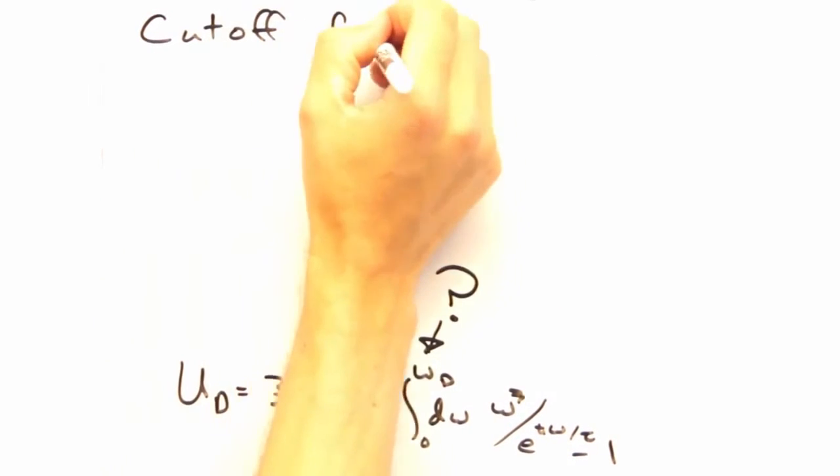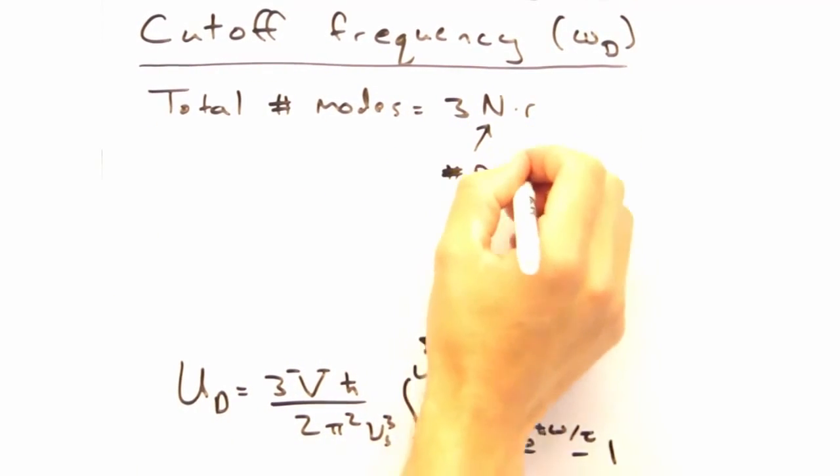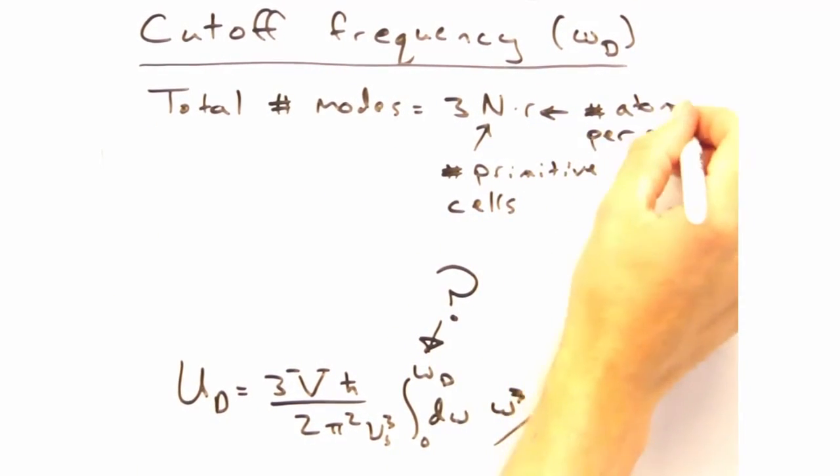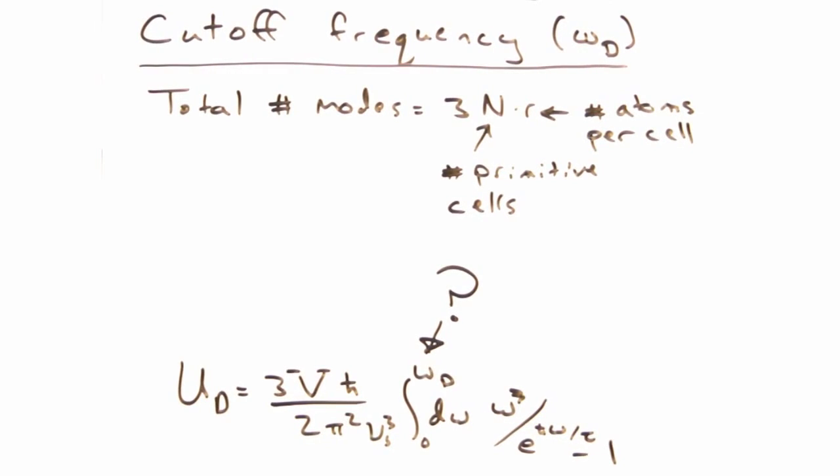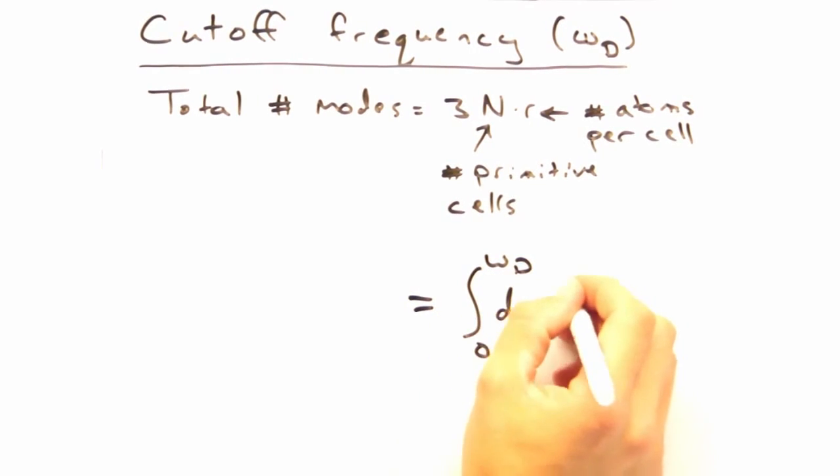But we're missing what our cutoff frequency is. Yeah, so we can figure that out by looking at the total number of modes in the system. We have two transverse and one longitudinal mode per atom, n cells, and then r atoms per cell. But we can also figure out the total number of modes by integrating over the density of states up to this cutoff frequency.